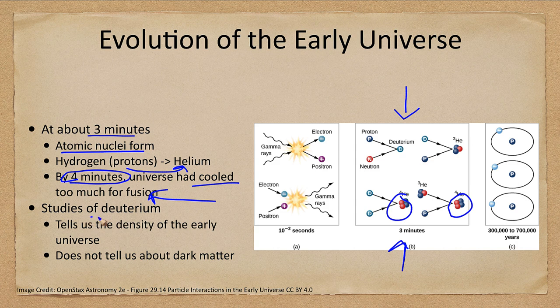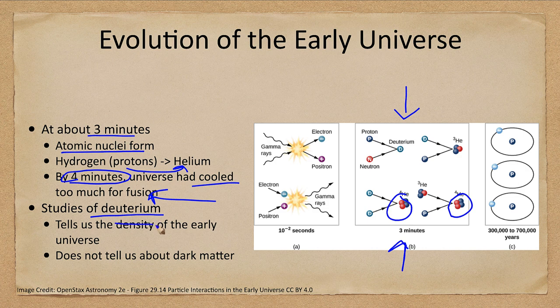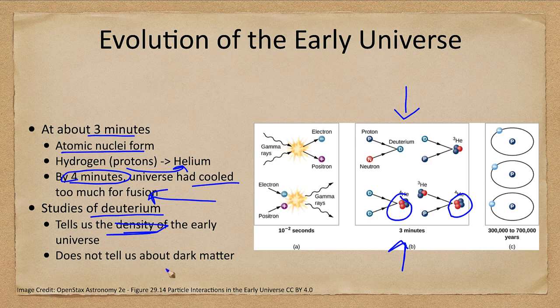Studies of deuterium, how much is left over, tells us about the density of the early universe—how dense was this early universe? What they do not tell us about is dark matter.